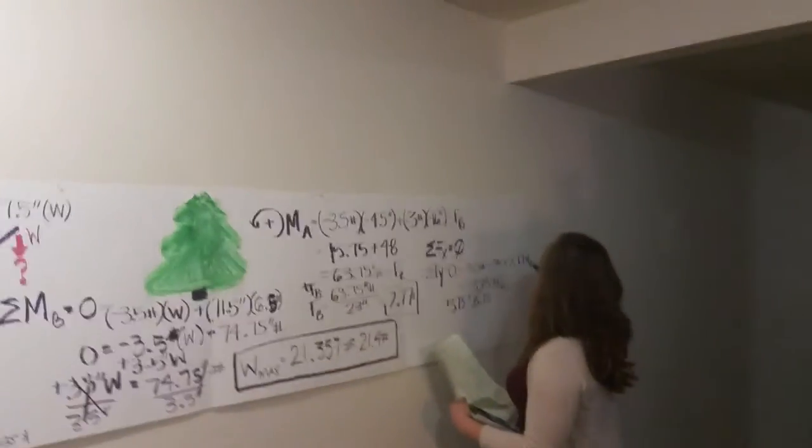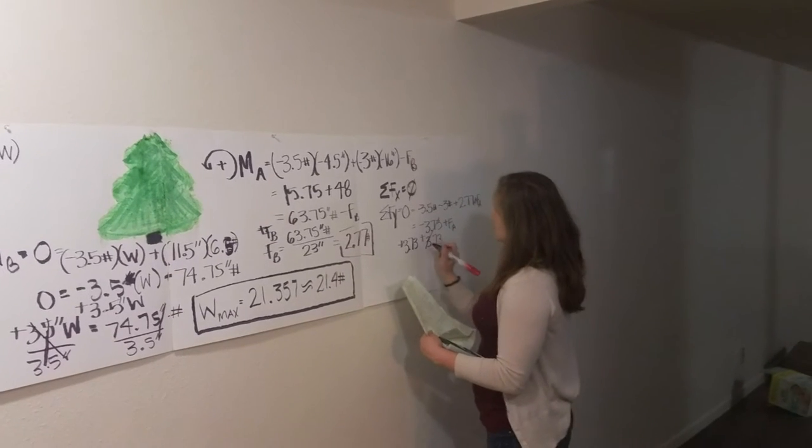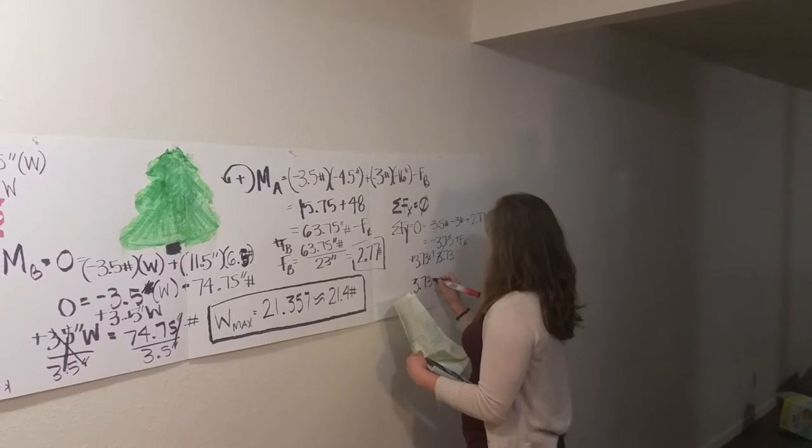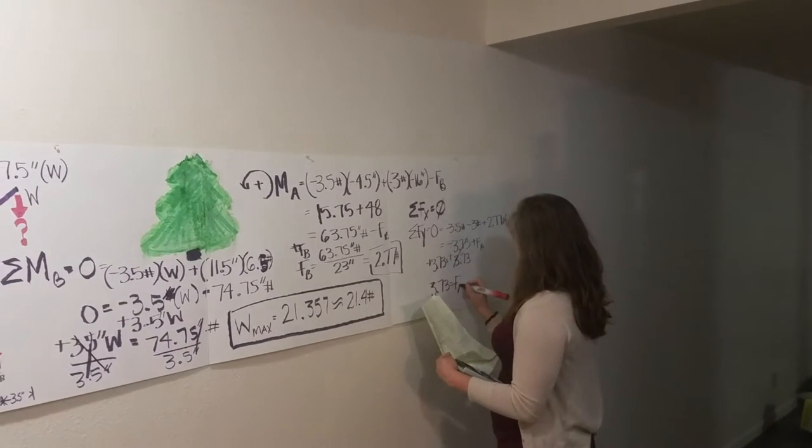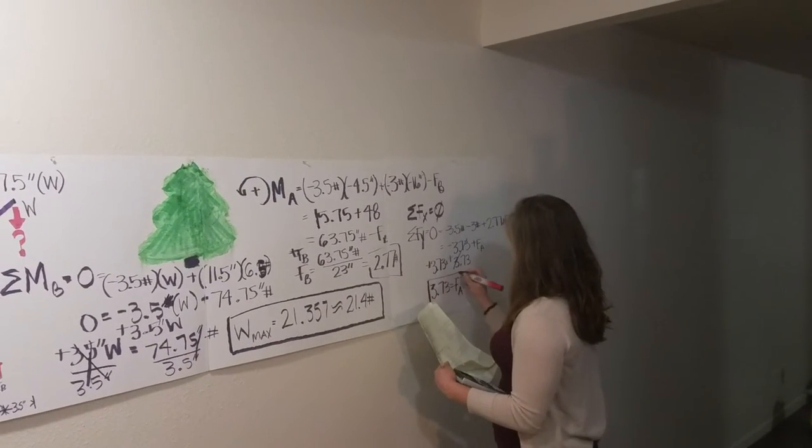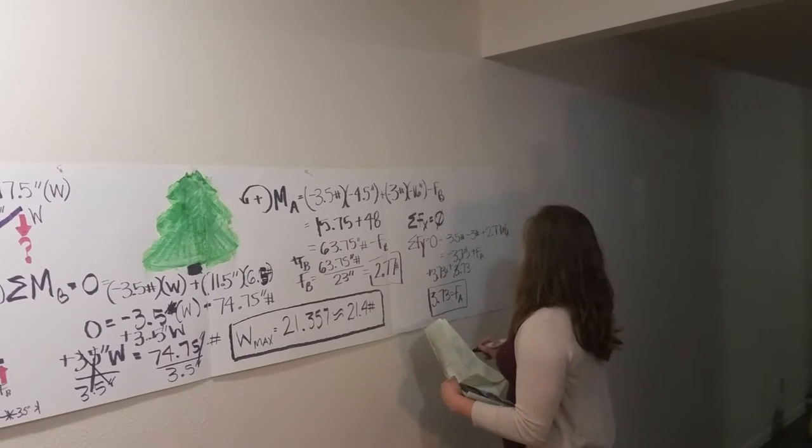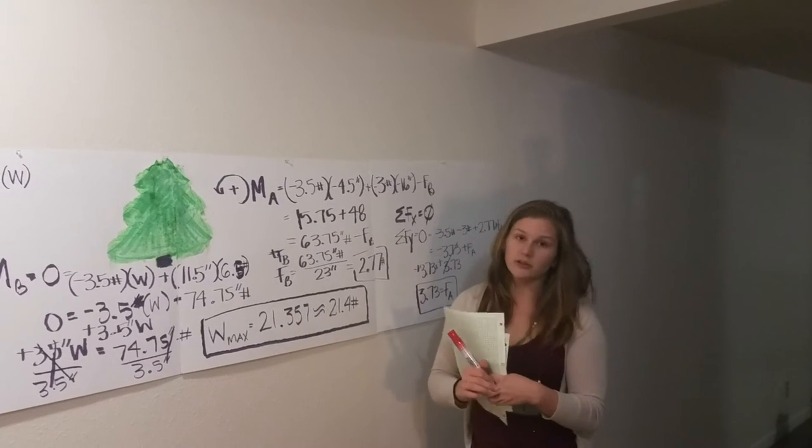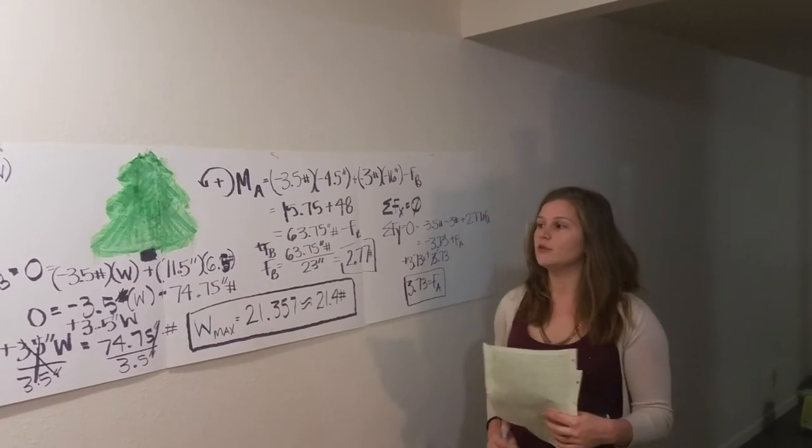And these are all pounds. So 3.73 equals FA. And when you add all of that together, it's equivalent to zero. So the crane unloaded would be in equilibrium.